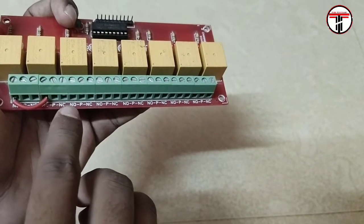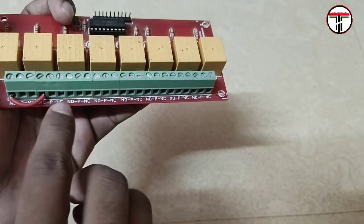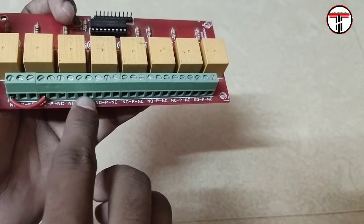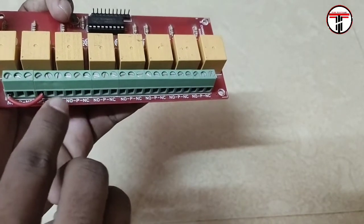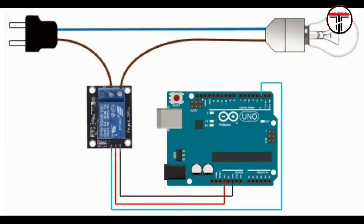If you want to connect a wire to the normally open pin and then connect the other two pins, you can connect a wire with a light in the same way. To control the relay basically and control the light, there is a circuit diagram. Here you use a single channel relay, connecting VCC, ground to ground, and the relay signal pin to an Arduino pin.